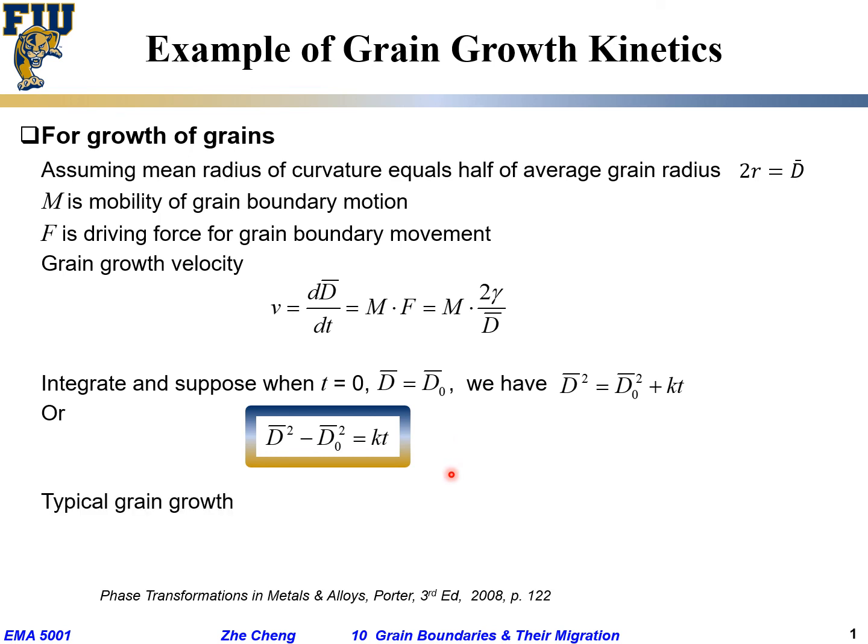This is an idealized situation. In reality, typical grain growth would have the exponent factor not necessarily be two, but maybe from one all the way to two for the general growth case.